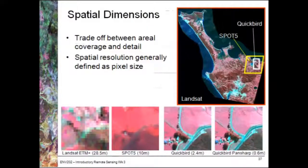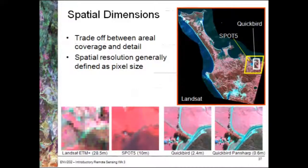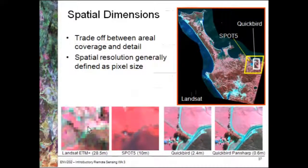There's always a trade-off between the scene extent, or swath width, and the amount of detail or pixel size that we can see. For example, the Landsat image shown here covers a large area — in this case, the northern tip of New Zealand. It covers a large area, but if we look at the amount of detail, there isn't a lot. You can see the individual pixels at 28.5 metres.